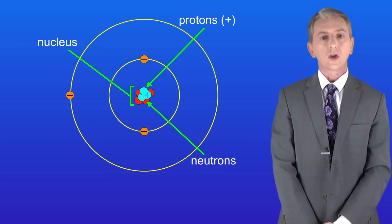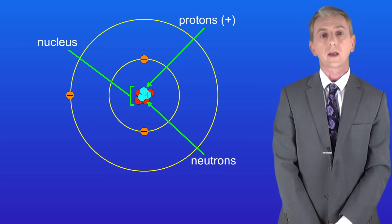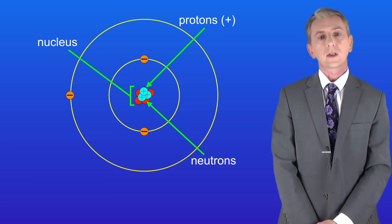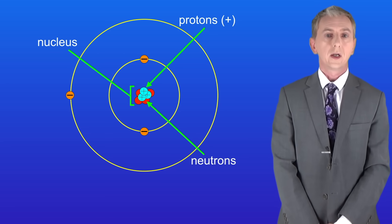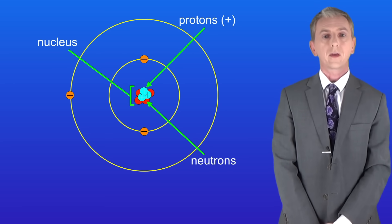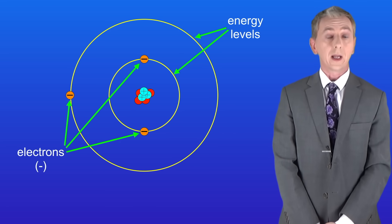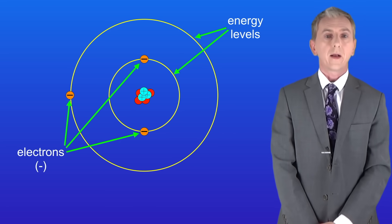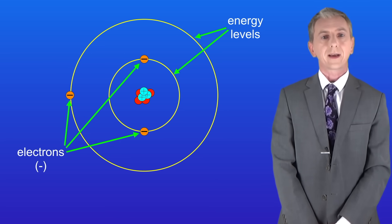In the last video we looked at the structure of atoms. We saw that atoms contain a central nucleus, and this contains protons which are positive and neutrons which are neutral — they've got no charge. Around the nucleus we've got electrons and they're in energy levels. Remember that electrons are negative.